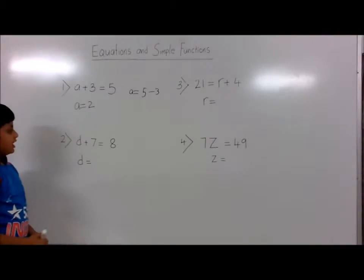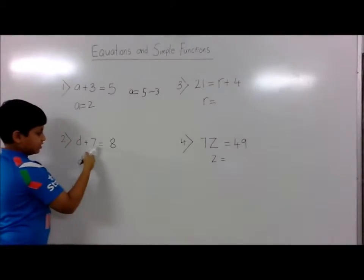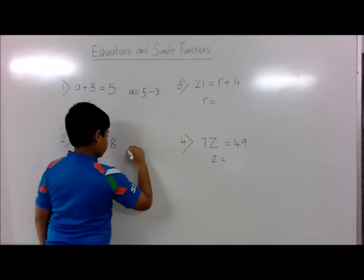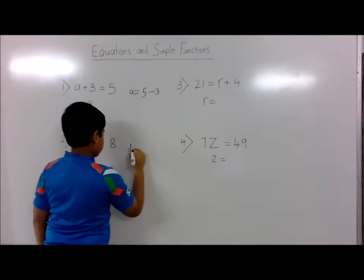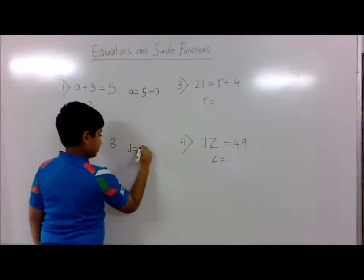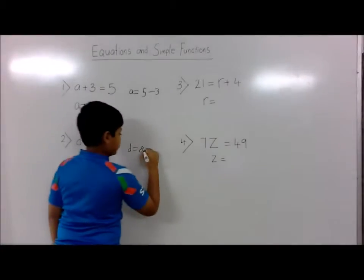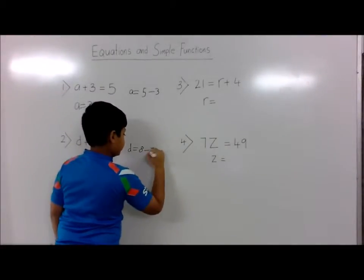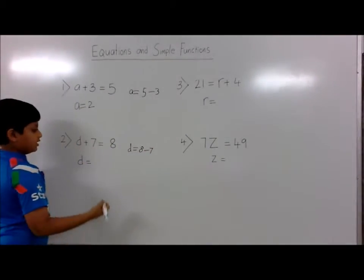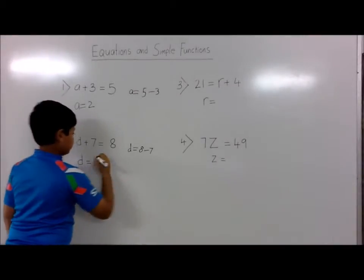Second question: d plus 7 is equal to 8. d plus 7 becomes minus 7. 8 minus 7 is 1, so d is equal to 1.